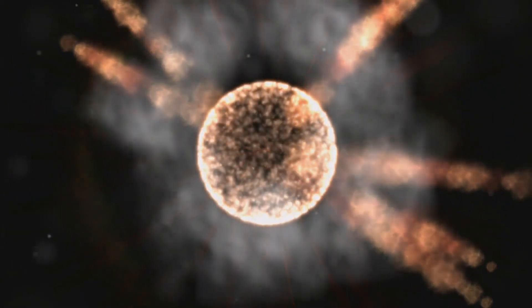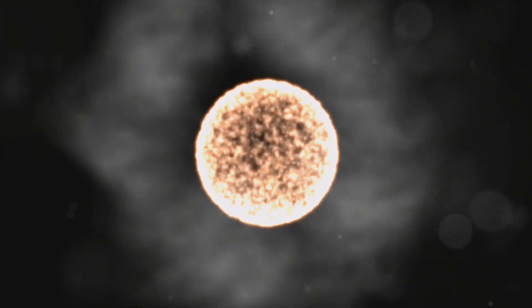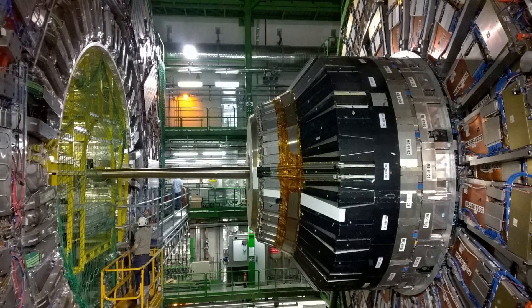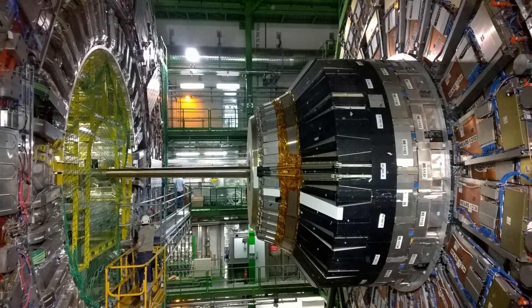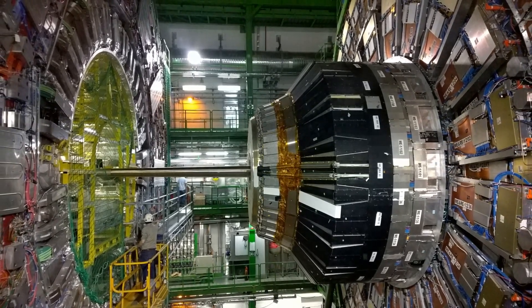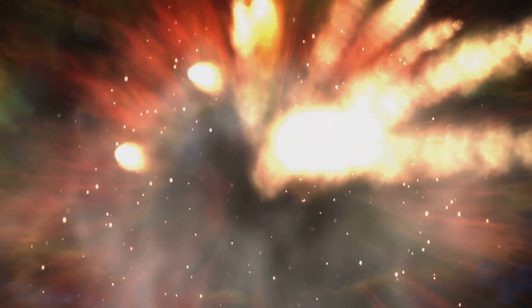Echoes of the Big Bang: Recreating the Primordial Soup. In the moments after the Big Bang, the universe was a hot, dense soup of elementary particles. At CERN, scientists are recreating these primordial conditions in miniature using powerful particle accelerators. By smashing heavy ions together at nearly the speed of light, they create a state of matter called quark-gluon plasma.